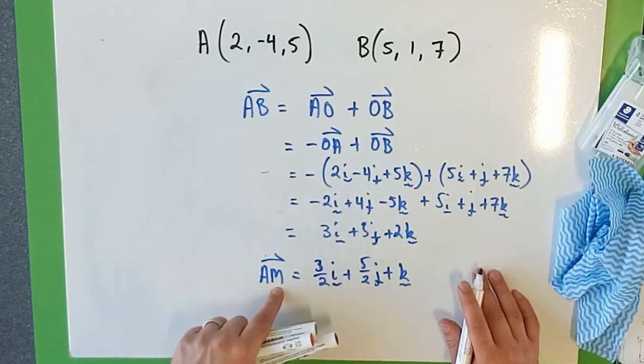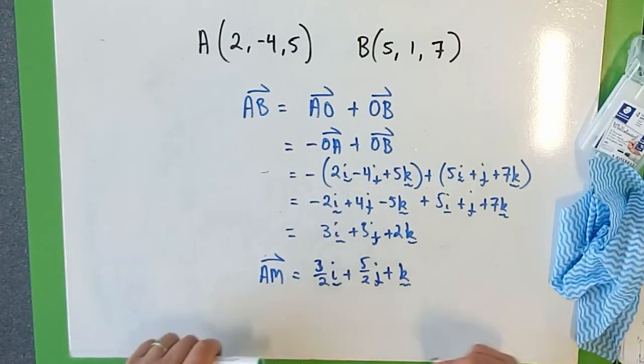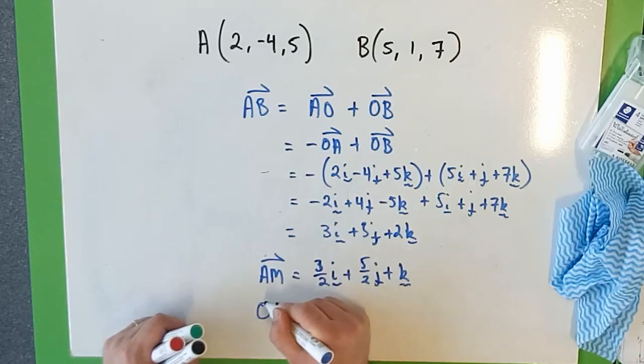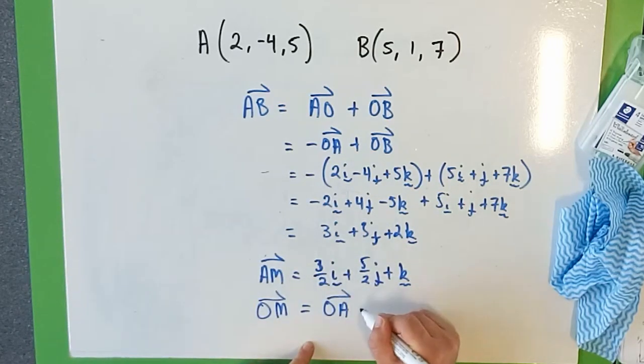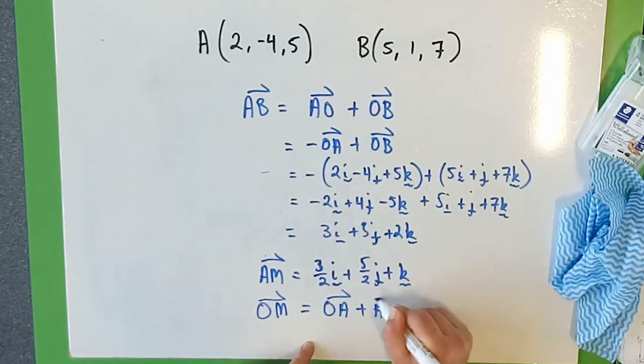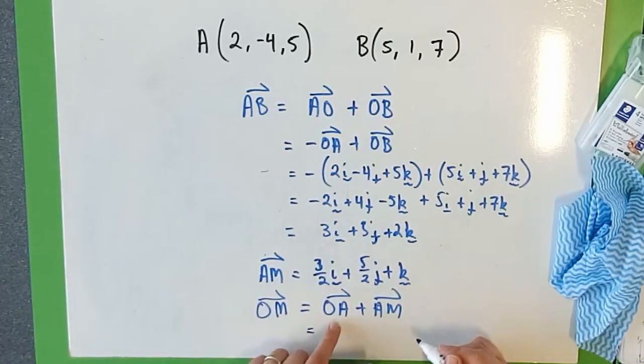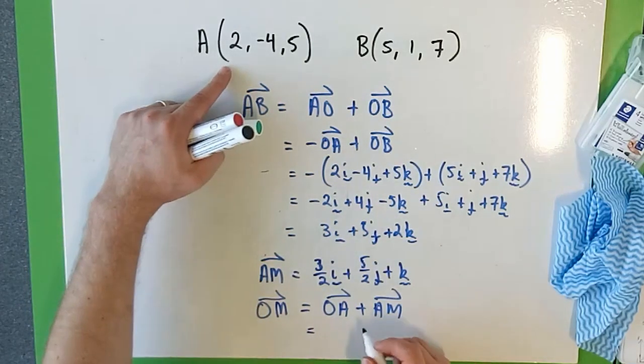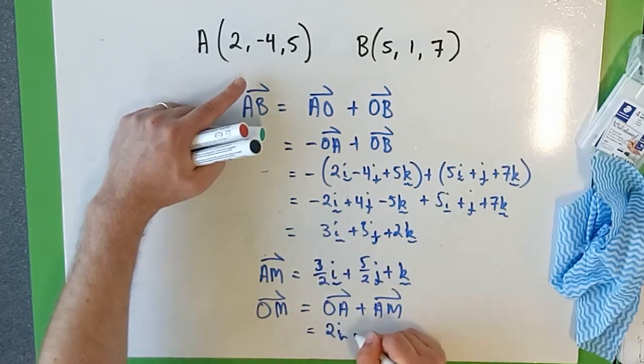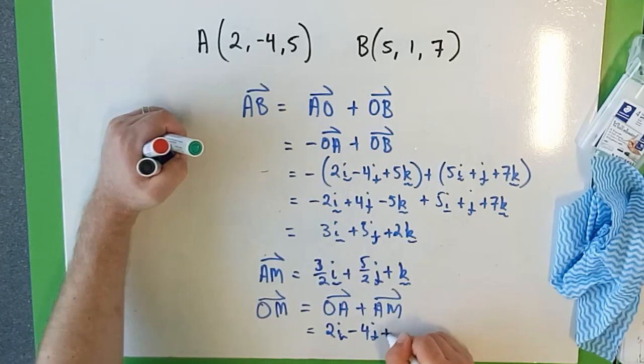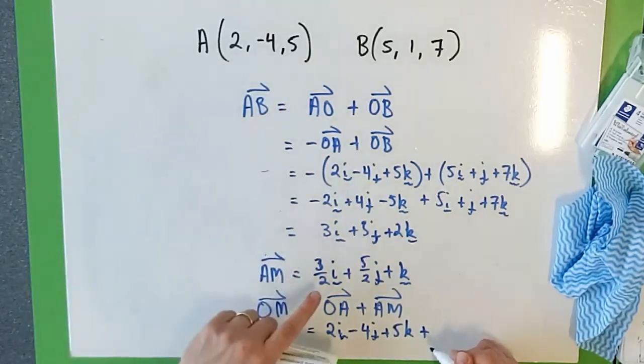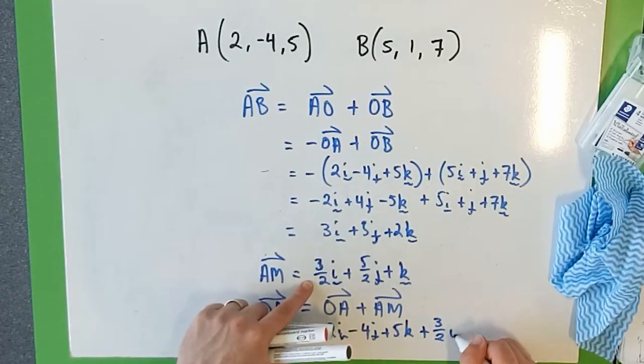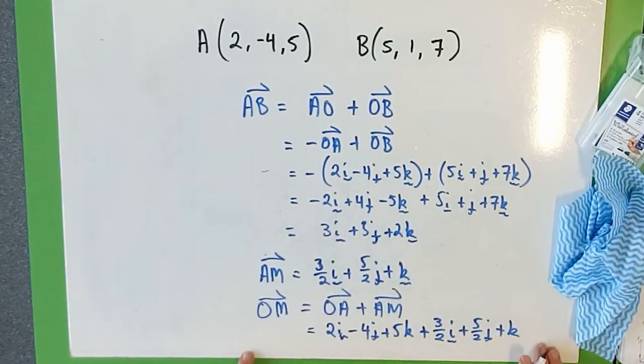Now I actually want the coordinate of M, so I really want O to M, so how do I get O to M? O to M is O to A plus A to M. So O to A we've got here, 2i minus 4j plus 5k, plus A to M, which is this one, 3 over 2i plus 5 over 2j plus k.